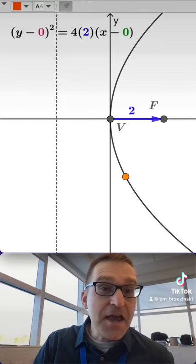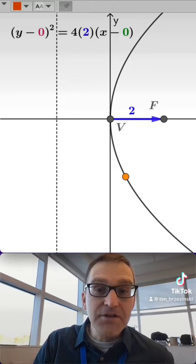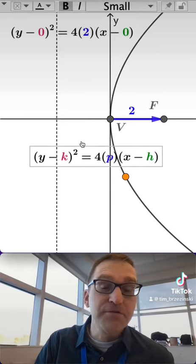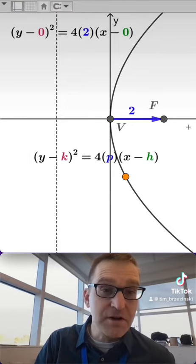And that blue number, P, we call it actually, as you can see right here, that's actually the directed distance from the vertex to the focus, as you can see right there.